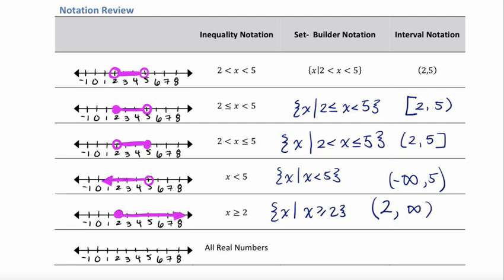Finally, we have all real numbers. This can be represented by the bold face R symbol. In interval notation, you write negative infinity to positive infinity with parentheses. On the graph, we just have arrows going in two directions — everything on the number line is included, so we go off infinitely in the negative and positive directions.